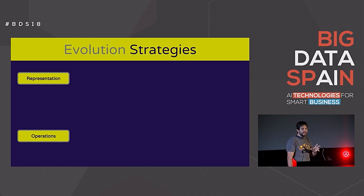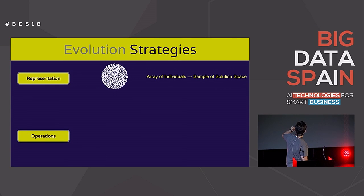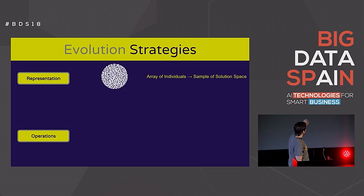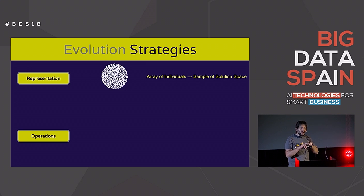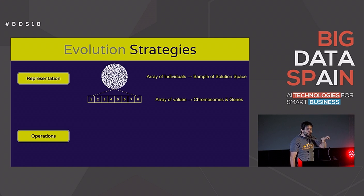How do evolution strategies fit here? Evolution strategies are well-known models that can resolve particular small problems. The problem historically is they don't scale well. In evolution strategies, we always have an array of individuals called a population. Each individual is a sample of the solution space — every individual is a potential solution for your small problem. These individuals have an array of values representing their genes and chromosomes, and how well they perform for that specific problem.